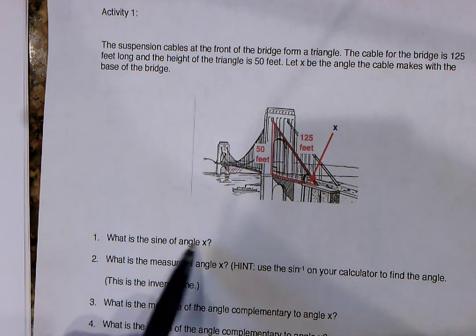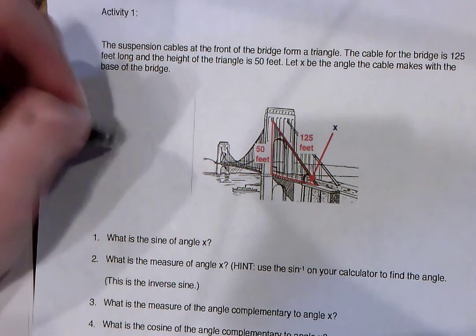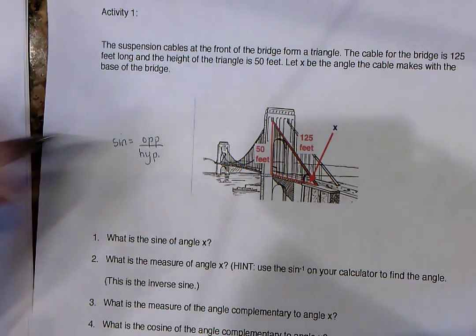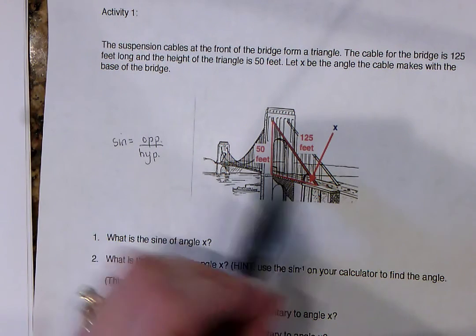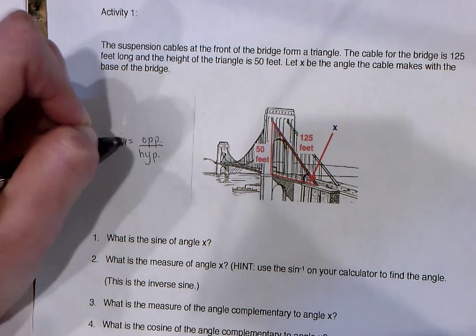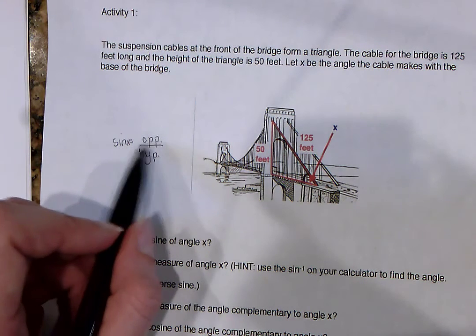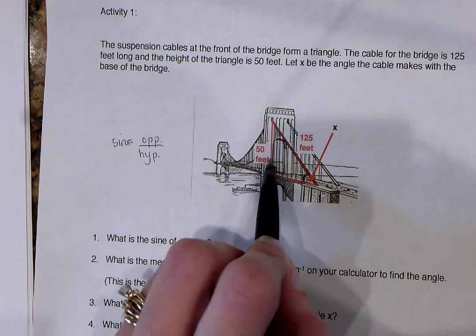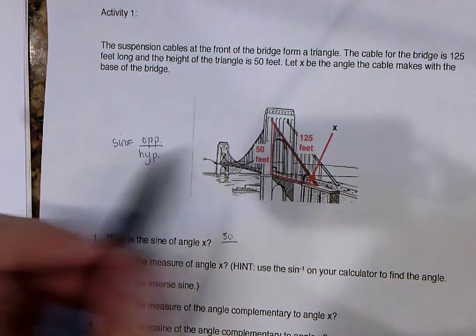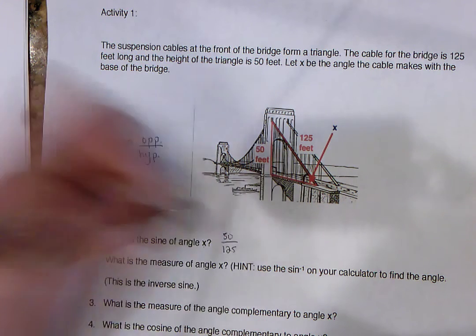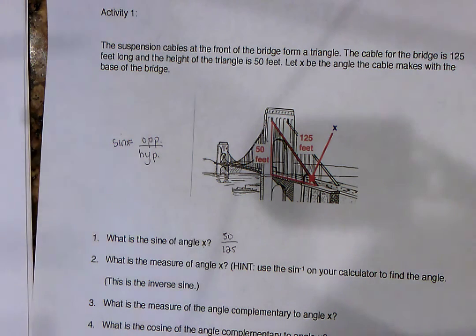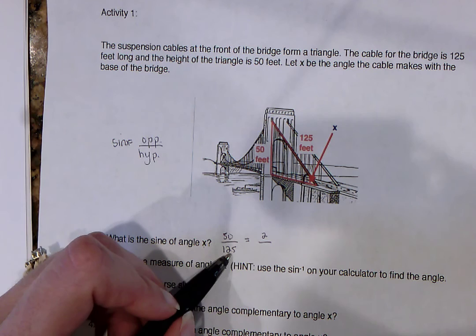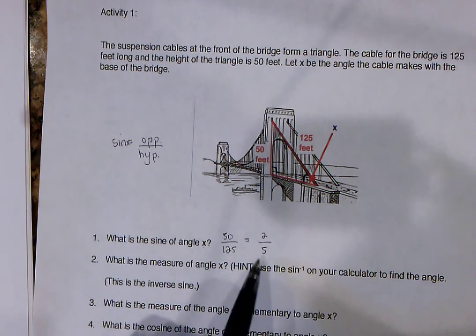What's the sine of angle x? If you remember from yesterday, we talked about the sine being the opposite side over the hypotenuse. So sine of x equals the opposite over the hypotenuse. Starting at x, we have to go opposite, which is 50, over the hypotenuse, which is 125 feet. You can reduce that fraction by dividing both by 25. I get 50 divided by 25 is 2, 125 divided by 25 is 5, so that's the final reduced fraction, 2/5.